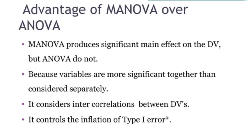The advantages of MANOVA over ANOVA: MANOVA produces a significant main effect on the dependent variable. You can identify what effect it produces on the dependent variable, and by finding the correlation between dependent variables, it reduces Type 1 error. This is the major advantage of MANOVA over ANOVA.